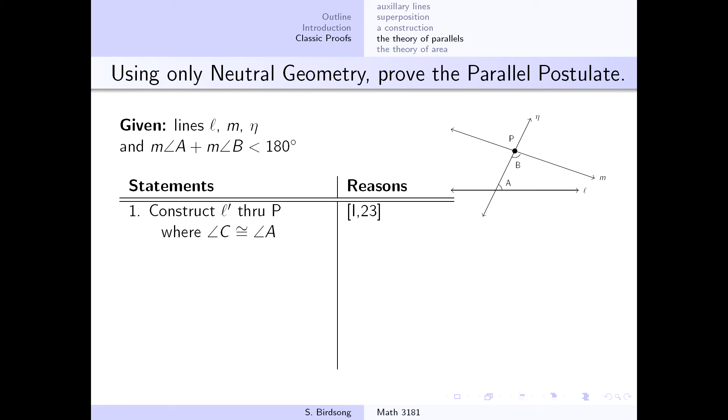So the first thing that we're going to do is we're going to actually apply our proposition 23 from book 1, and what this says is we're going to go ahead and construct a line that we'll call L prime through this point P, where P is the intersection of N and M,